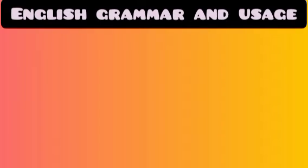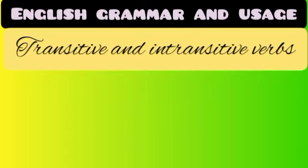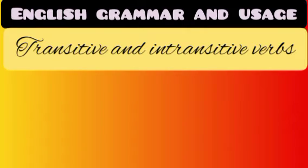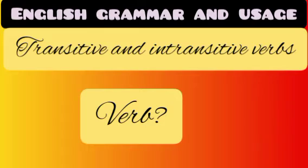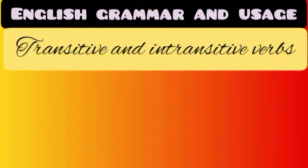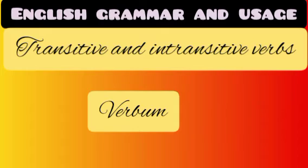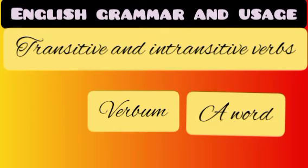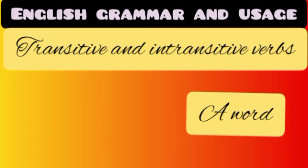English grammar and usage — let's understand transitive and intransitive verbs. A verb is a word which expresses an action or a state, or a verb is a word that tells or asserts something about a person or thing. Verb comes from the Latin word 'verbum,' which means 'a word.' Thus, it is the main word in a sentence.